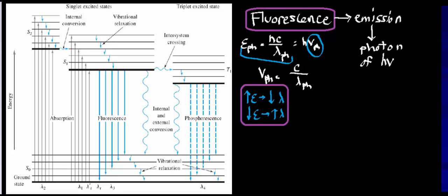To orient you with this diagram, the bold line represents the ground state electronic configuration of an atom or molecule. T1, S1, and S2 represent excited states that the electrons can be in. You essentially have to use light to excite electrons from the ground state into any excited state.